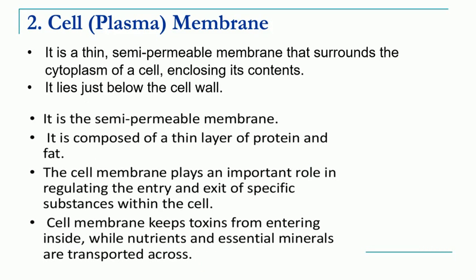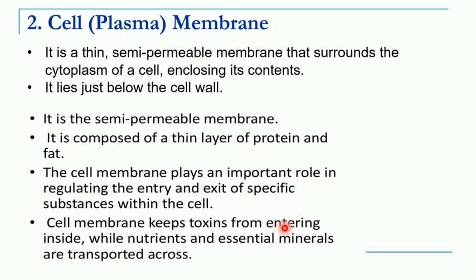We come to the innermost layer of the plant cell, which is called as plasma membrane or cell membrane. The plasma membrane is made up of phospholipids and it is the semi-permeable layer which surrounds the cytoplasm of the cell. All the contents of the cell are enclosed by this plasma membrane, and it is made up of proteins, lipids, and fats. This cell membrane regulates the entry and exit of specific substances in the cell and keeps toxic molecules from entering inside the cell.